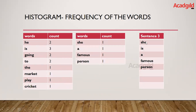Now for sentence three, the word 'she' is new so it is added with count one. 'Is' is already present so its count is incremented. 'A' is also new and added as a separate word. 'Famous' and 'person' were not already in the histogram so they are added with count one. The final table on the left shows the complete frequency of all words present across the entire corpus.